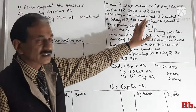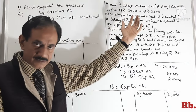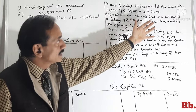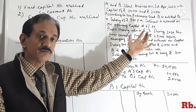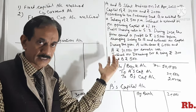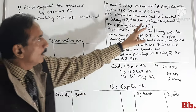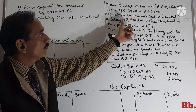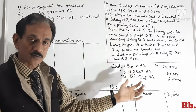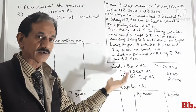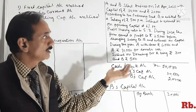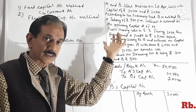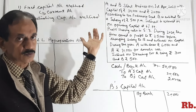According to the partnership deed, B is entitled to a salary of Rs.500 per month, which comes to Rs.6,000 per year.